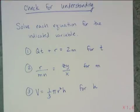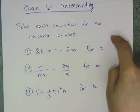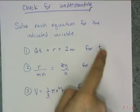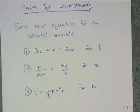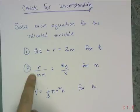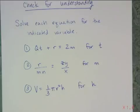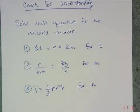To check your understanding of transforming formulas — solving equations that have multiple variables where the answer also has multiple variables — solve each equation for the indicated variable. First, solve for t. Second, solve for m, and be careful because m is currently in the denominator. Third, the volume of a cone formula — solve that for the height of the cone.